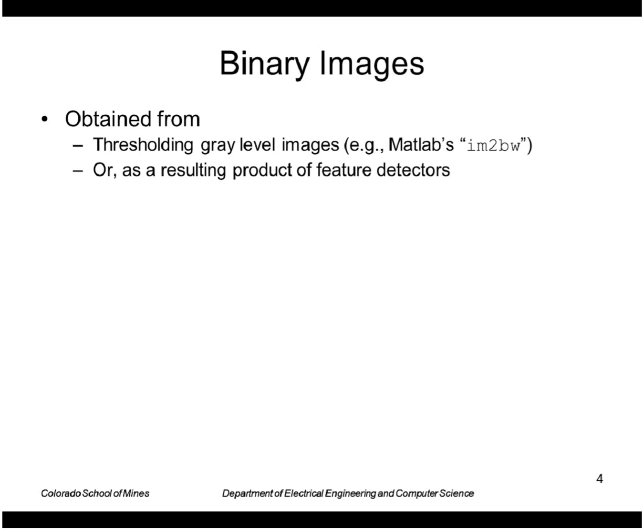Another way binary images can come from is as a result of feature detectors. For example, the normalized cross correlation produces a score image that you can threshold, and then those peaks represent the locations of detected templates.